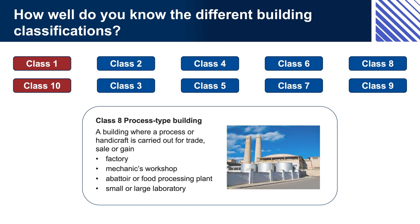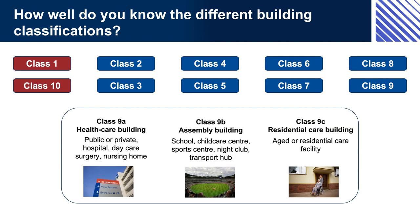Class 9A: health care building — public or private. Hospital, daycare, surgery, nursing home. Class 9B: assembly building — school, children's centre, sports centre, nightclub, transport hub. Class 9C: residential care building — aged or residential care facility.